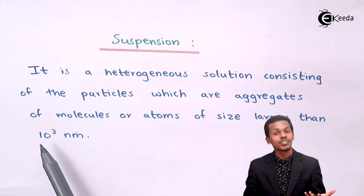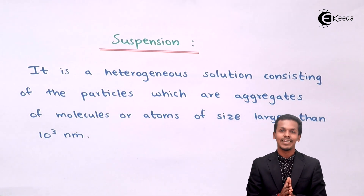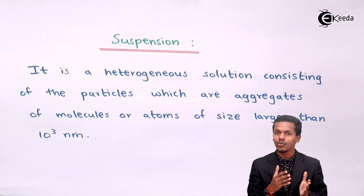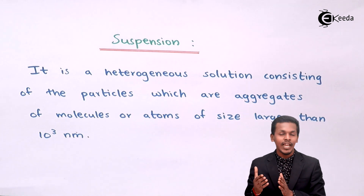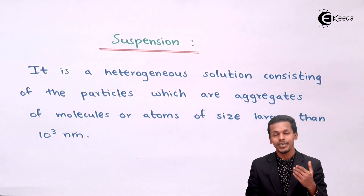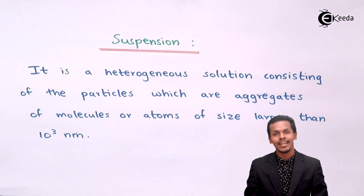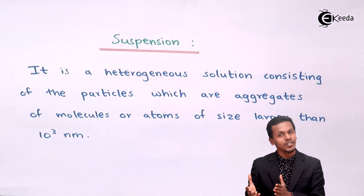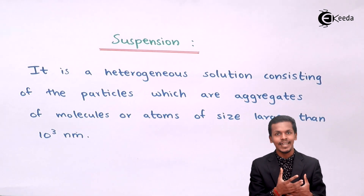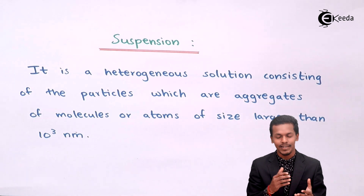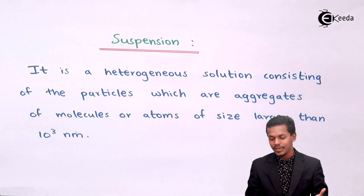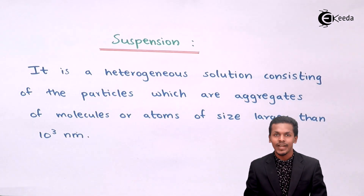The particle size of suspension is larger than 10³ nanometers. True solutions have a particle size of 0.1 to 1 nanometer, and from 1 nanometer to 10³ nanometers it is called a colloidal solution or colloidal dispersion. Suspension particles are larger than 10³ nanometers, which is why it is called a suspension.